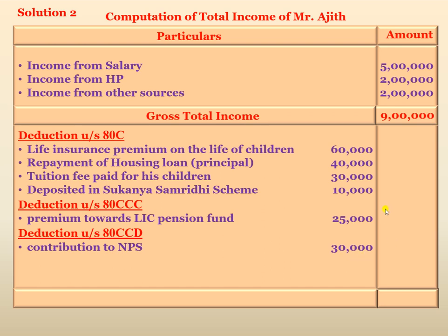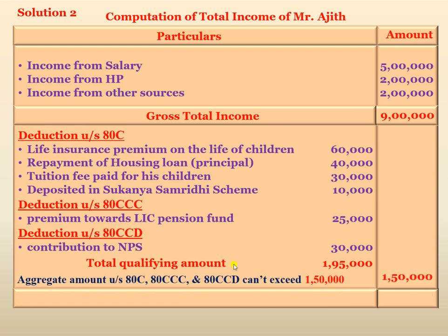The total qualifying amount across Section 80C, Section 80CCC, and Section 80CCD comes to Rs. 1,95,000. However, the aggregate amount under these three sections — 80C, 80CCC, and 80CCD — cannot exceed Rs. 1,50,000.